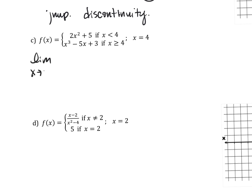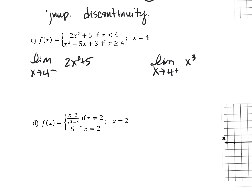Now we check the limit as x approaches 4 from the left versus from the right. Approaching 4 from the left means x less than 4, so I use 2x squared plus 5. From the right, I use the other function: x cubed. Plugging in 4 to each — the left side gives 37, and the right side gives 47 — so they don't equal each other. Anytime the limits don't equal, it's always just a jump discontinuity.